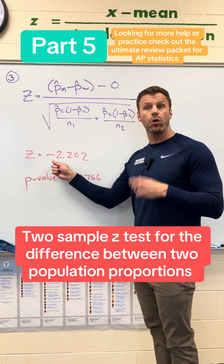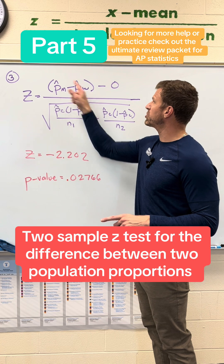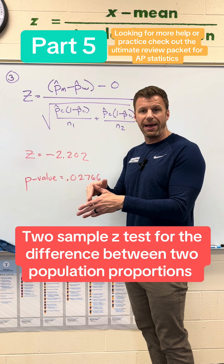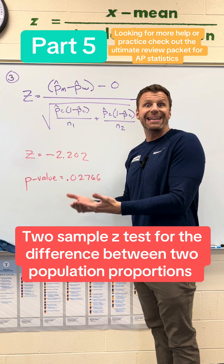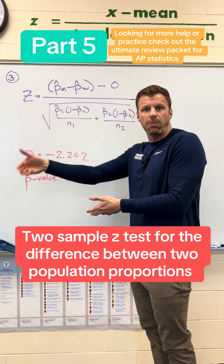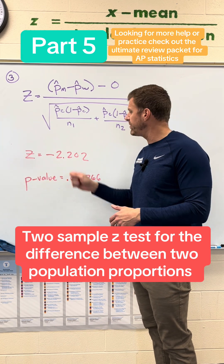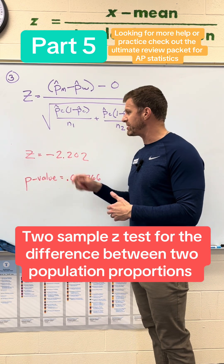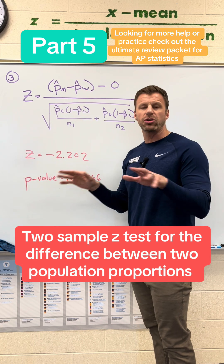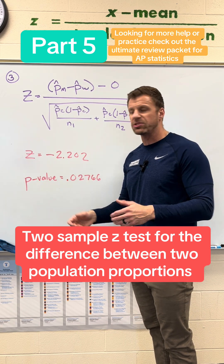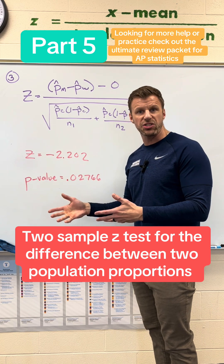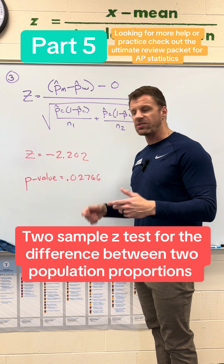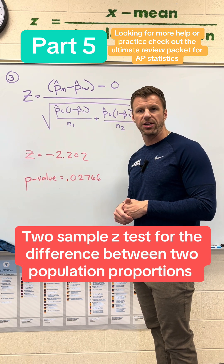One important thing: your z-score could be positive or negative depending on the order you subtracted. We had women at 40% and men at 30%, so I got a negative 10 difference by doing the smaller number first, which is why my z-score is negative. If you flip the order, you get positive 10 and a positive z-score of 2.202, looking at the upper tail instead. But regardless, because of symmetry, your p-value will not change.